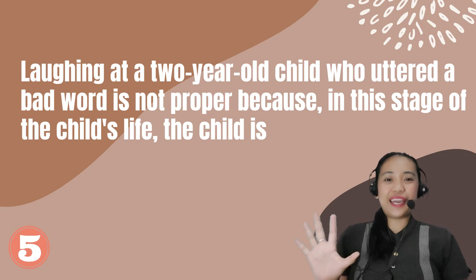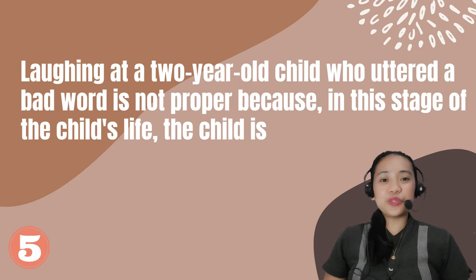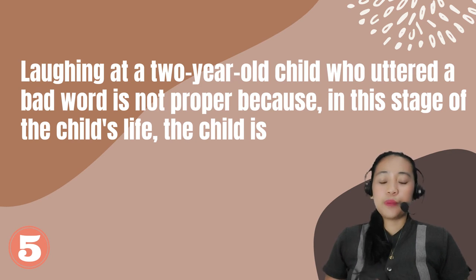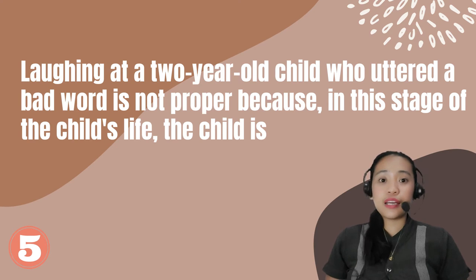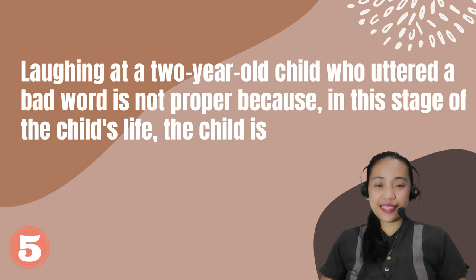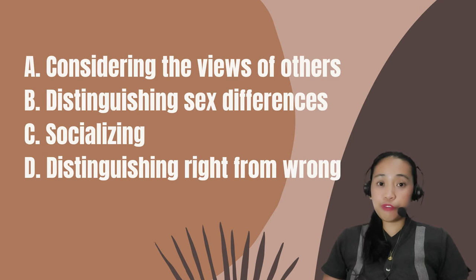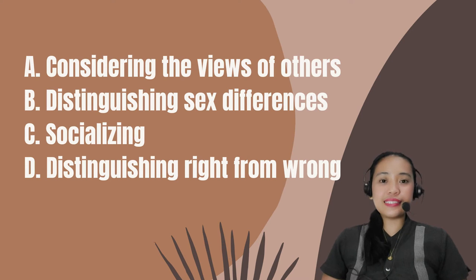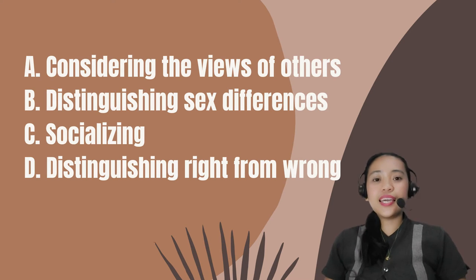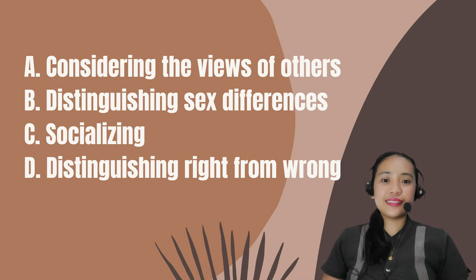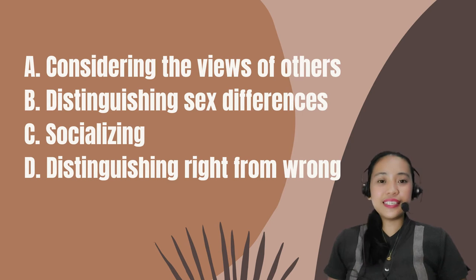Number 5. Scolding a 2-year-old child who uttered a bad word is not proper because in this stage of the child's life, the child is blank. A. Considering the view of others. B. Distinguishing sex differences. C. Socializing. D. Distinguishing right from wrong.